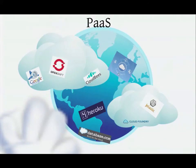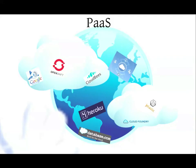As the application developer, we want to play around with something where we can take an existing application without any code changes and just push it out to the cloud, or write specifically for a platform. One of the oldest ones is Google App Engine, but it has specific limitations and restrictions in how you code. OpenShift is JBoss, CloudBees — and there's the new Oracle OpenCloud, Heroku, Jelastic, and Cloud Foundry. I'm going to focus on a couple of these in the JEE space.